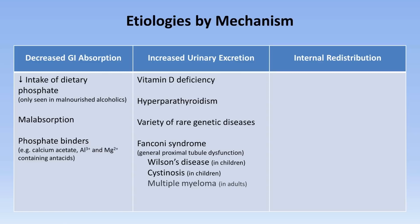In adults, it is most commonly seen in multiple myeloma, in which filtered light chains are toxic to the proximal tubular cells. Tumor-induced osteomalacia, also known as oncogenic osteomalacia, is a rare disorder in which compounds such as potentially FGF23 are secreted from a usually benign tumor, inhibiting phosphate transport in renal cells and leading to a combination of hypophosphatemia, renal phosphate wasting, and an inappropriately low calcitriol level. In contrast to Fanconi syndrome, the remainder of proximal tubular function is generally intact.